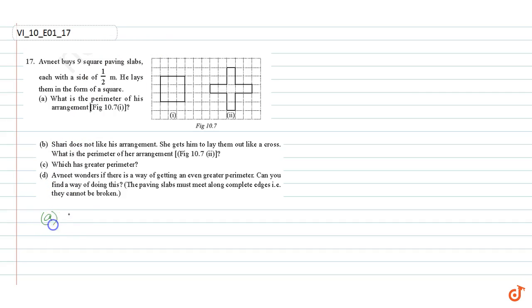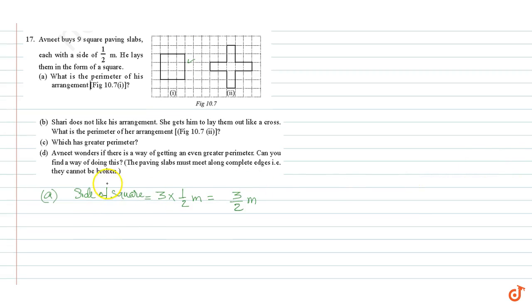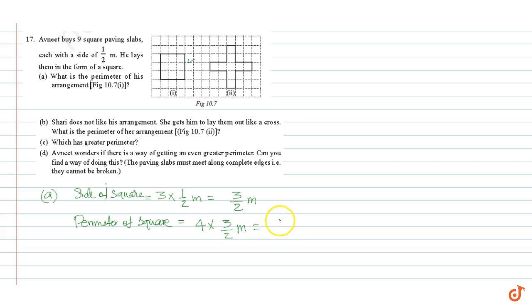Part A. The side of the square arrangement is 3 into half meter, equal to 3 by 2 meters. The perimeter of the square is equal to 4 into the side, that is 4 into 3 by 2 meters, which equals 6 meters.